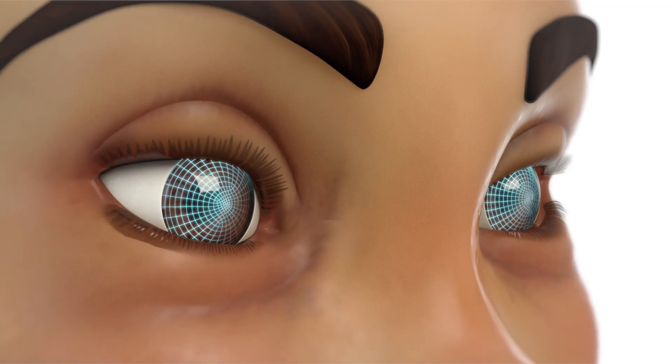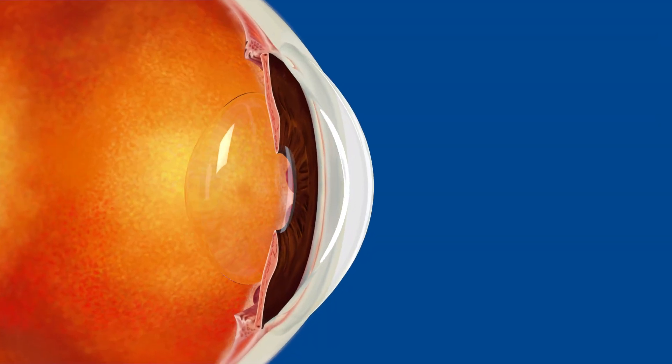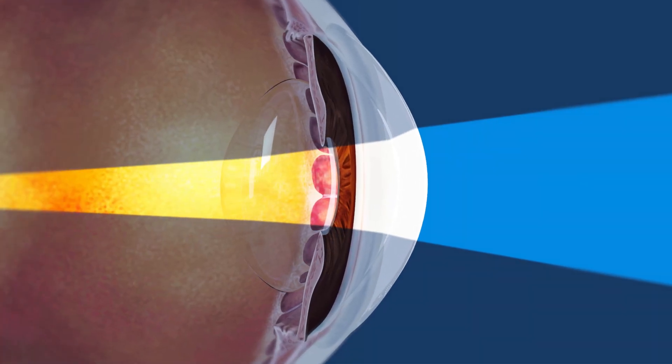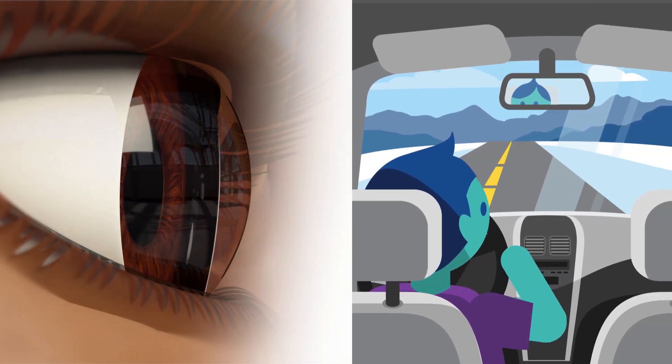The cornea is the clear, rounded layer on the front of your eyes. Your corneas focus light entering your eyes so you can see clearly. Like the windshield of a car, they are the crystal clear barrier between your eyes and the world.